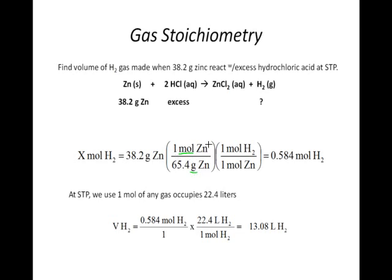So how much does one mole of zinc weigh? We look at the periodic table, and we find that one mole of zinc weighs 65.4 grams. So that's the first step.